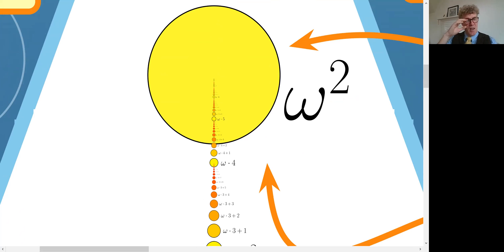This is the first compound limit ordinal. It's a limit ordinal because there's nothing immediately preceding it, but also there are these other limit ordinals omega times four, omega times five, omega times six and so on that are unbounded in omega squared.